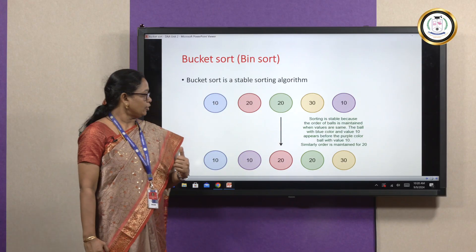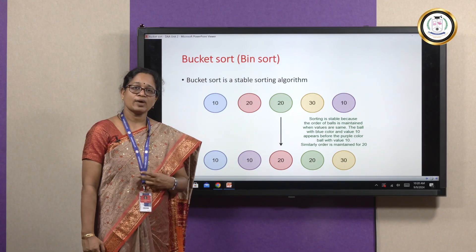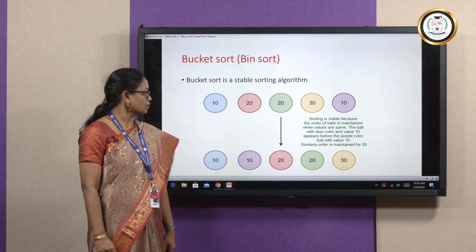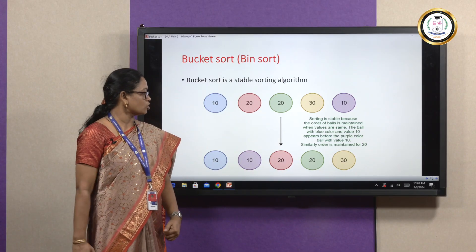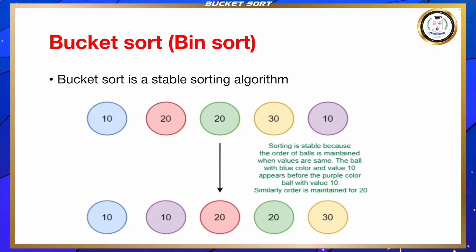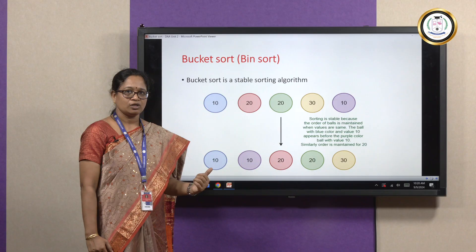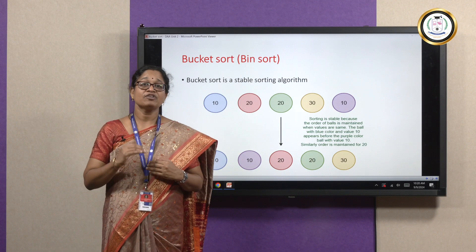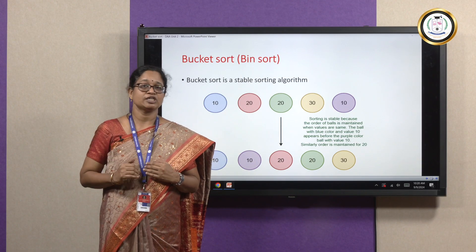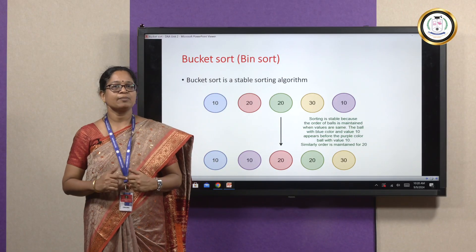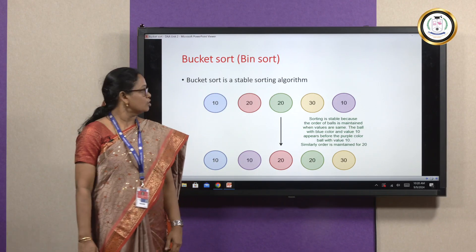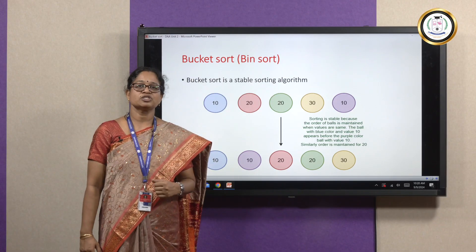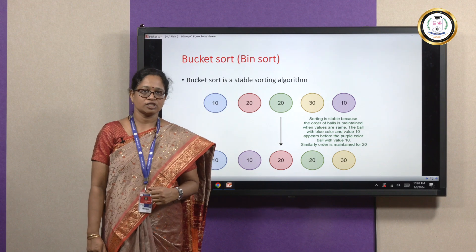Similarly, we can see two values that is 20. After sorting, the red ball with value 20 should come first and then only the green ball with value 20. So if such order is maintained even after sorting, we say that it is a stable sorting algorithm. Bucket sort is one of such stable sorting algorithms.